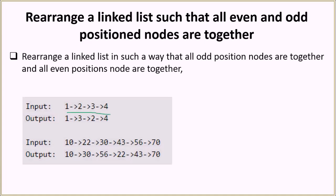For example, if you are given this as the input linked list, we'll put the first and third elements together, and the second and fourth elements together. Note that we are not positioning the elements on the basis of their value but their positions — that is why two and four are coming together.